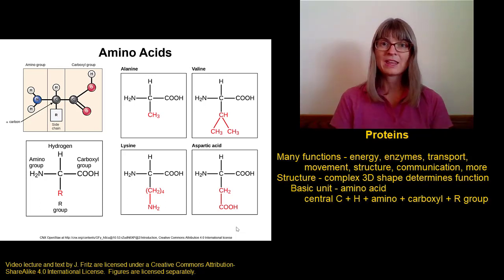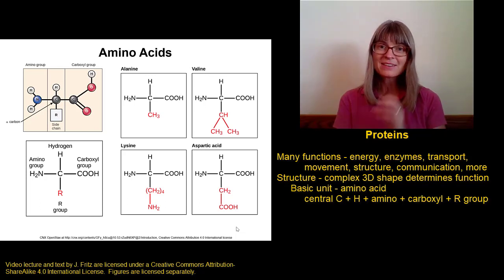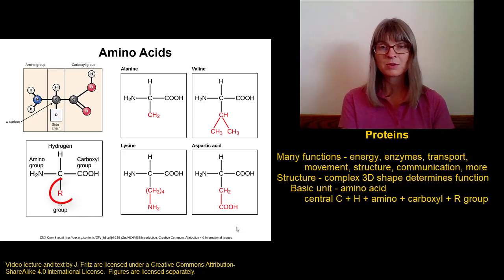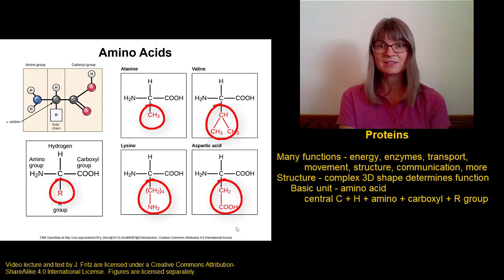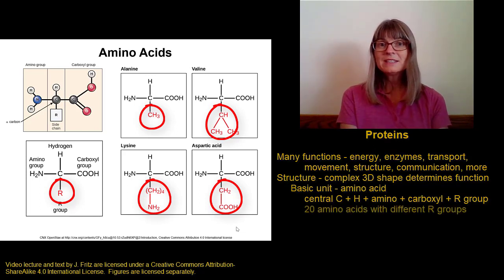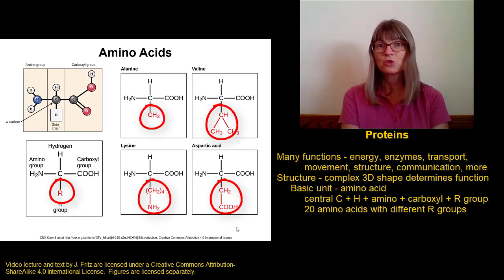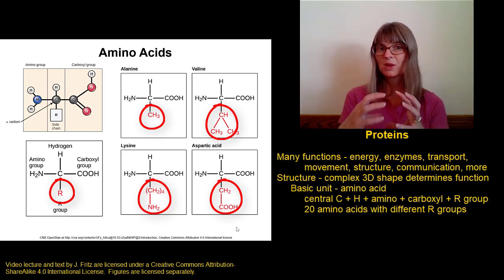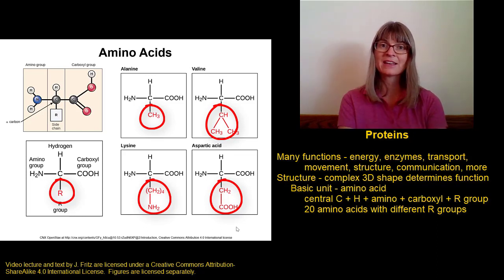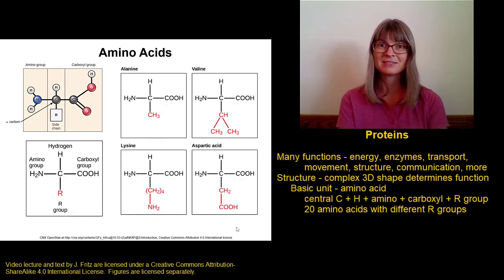That leaves room for one more thing. The last thing we have on our central carbon is called the R group. R just means remainder — it means whatever else is there. We have 20 different amino acids that have different R groups. So the R group is going to determine which amino acid you have, and there are 20 different options for what gets plugged into that last spot.